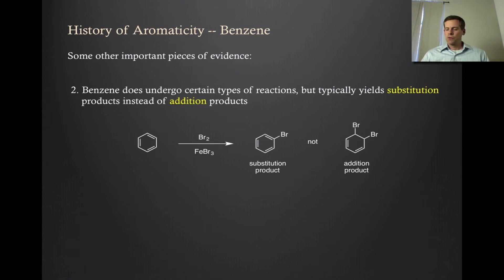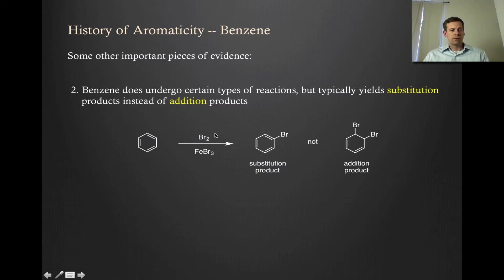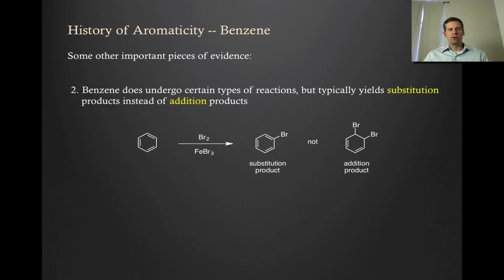Another important piece of evidence is that benzene does in fact undergo certain types of reactions. But what it typically does is substitution reactions, not the addition reactions you would expect for alkenes. For example, if you take benzene and treat it with bromine, nothing happens. But if you add a catalyst like iron tribromide, you do get a product — but it's not the addition product you would get with a normal alkene. It's actually the substitution product, where one of the hydrogens has been replaced with a bromine.